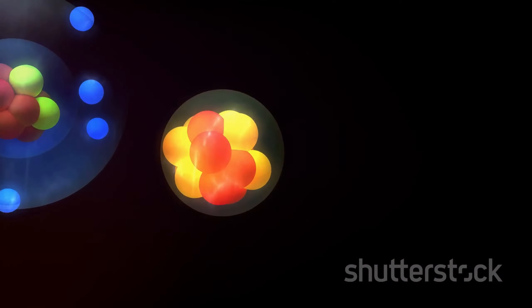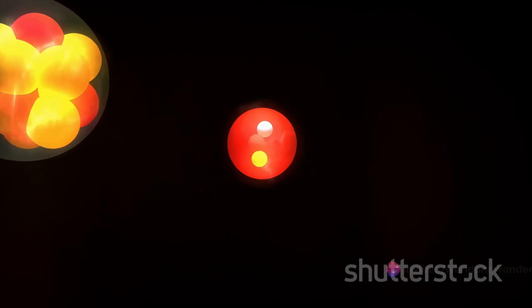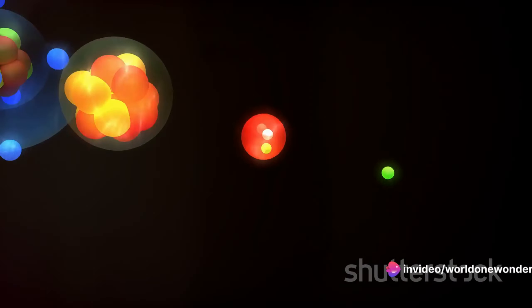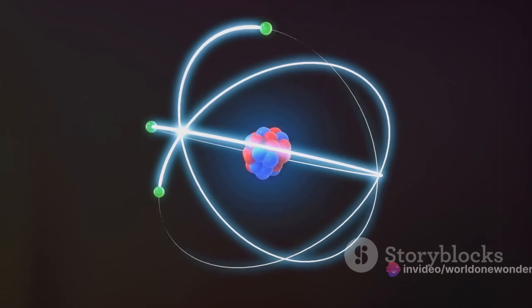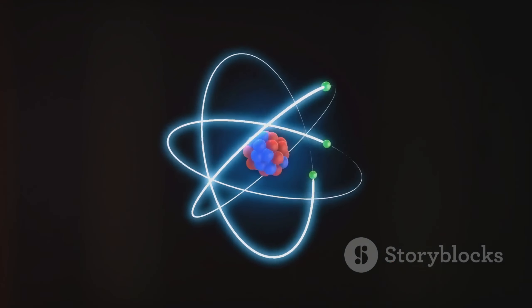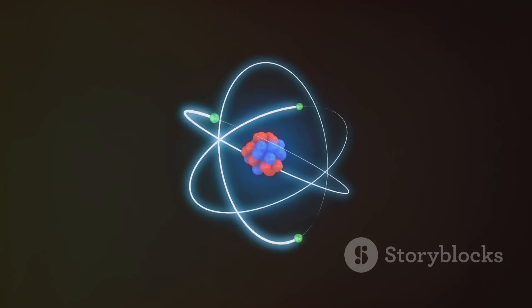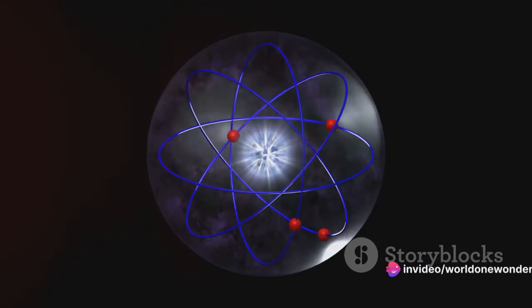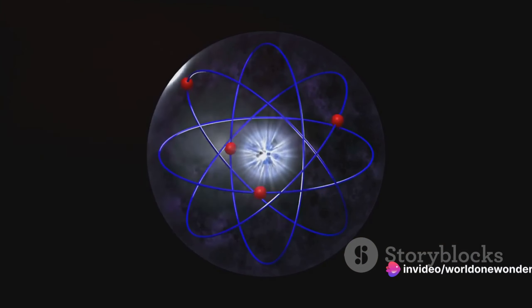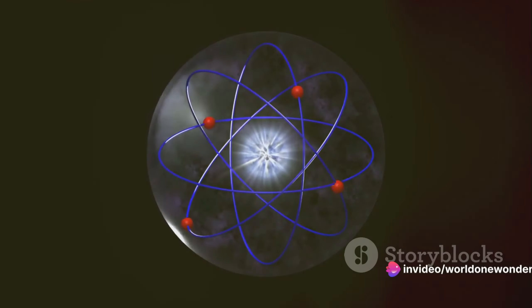Unlike their electron cousins, neutrinos carry no electric charge, making them neutral, hence the name neutrino, which means little neutral one in Italian. Their mass is incredibly tiny even by subatomic standards. Some theories suggest they could even be massless, although most scientists now believe they do have a small mass. Because of their lack of charge and minuscule mass, neutrinos are extremely elusive.